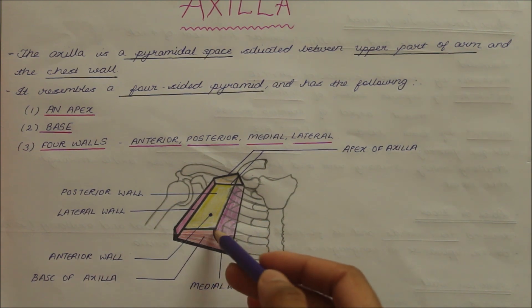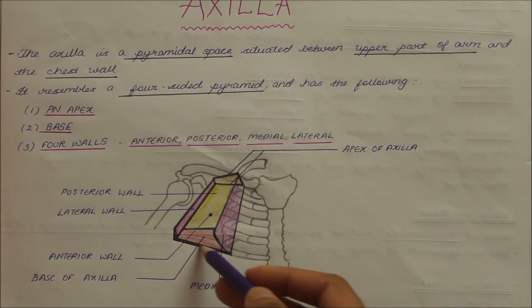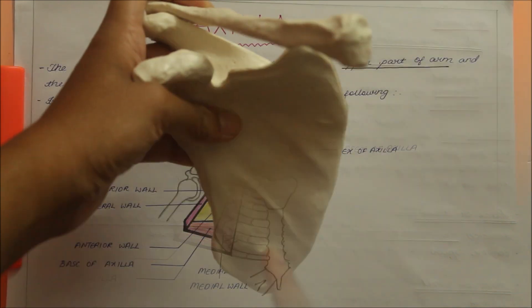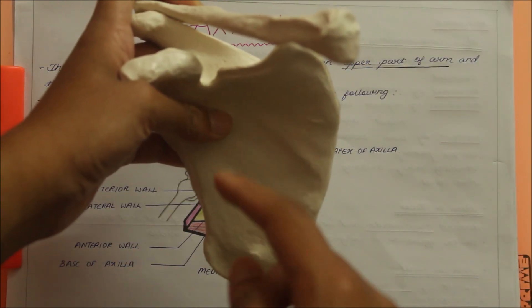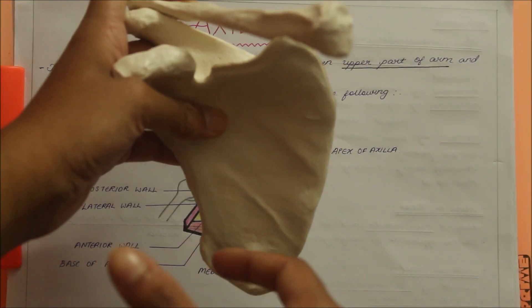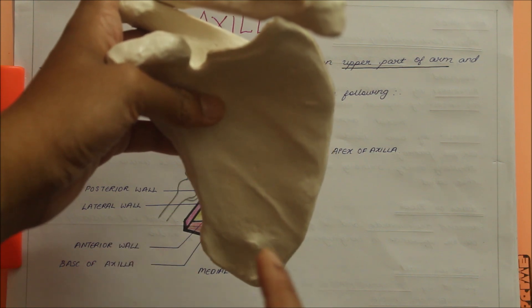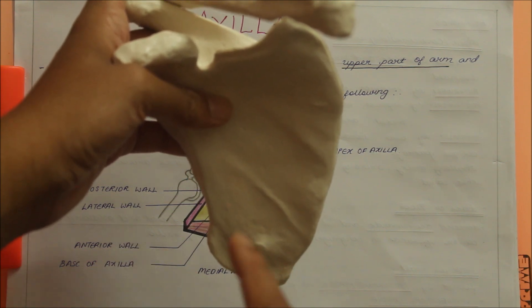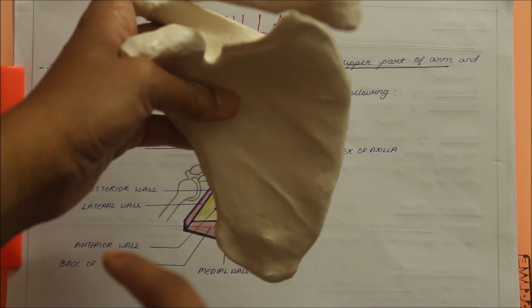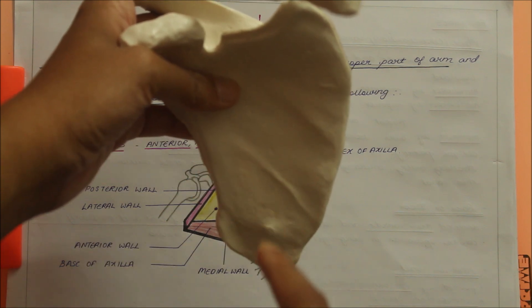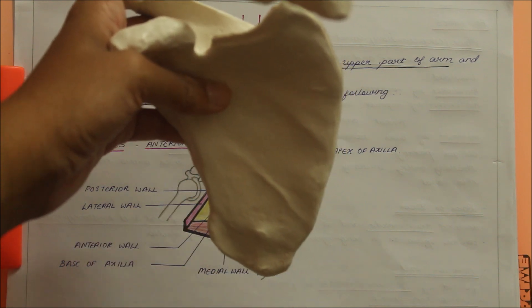Now let us look at the features of the base of the axilla. The base is directed downwards and is formed by the skin, superficial fascia, and axillary fascia. It is directed convex upwards in concordance with the concavity of the axilla.